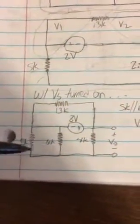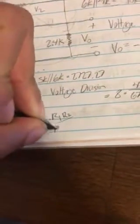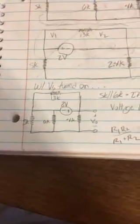And you can also see that the 5K and the 6K resistor are parallel. And because they're parallel, we'll do that equation: R1 times R2 over R1 plus R2.